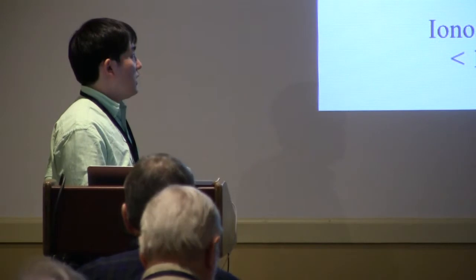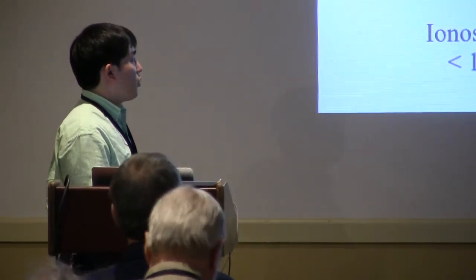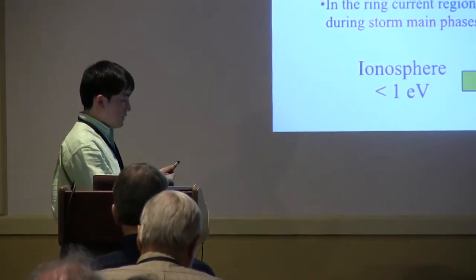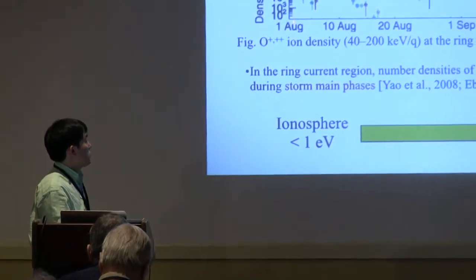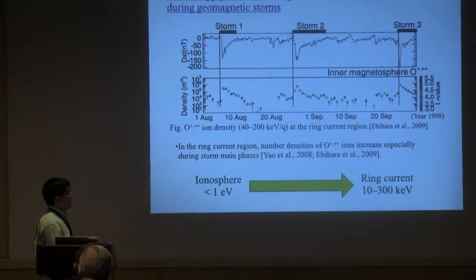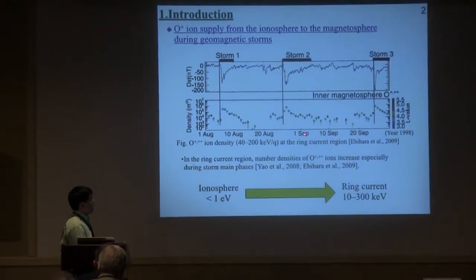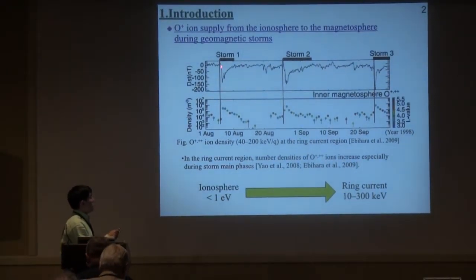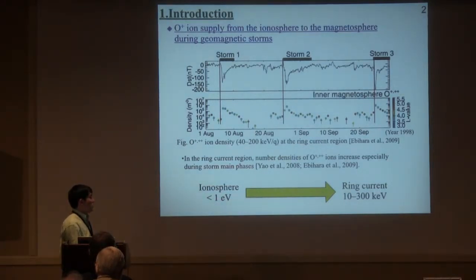In the inner magnetosphere, oxygen ions increase during storm main phase. This panel shows the oxygen ion density in this energy range in the inner magnetosphere. During the main phase, the oxygen density suddenly increases. This indicates ionospheric plasma transported to inner magnetosphere and energizations also occur.